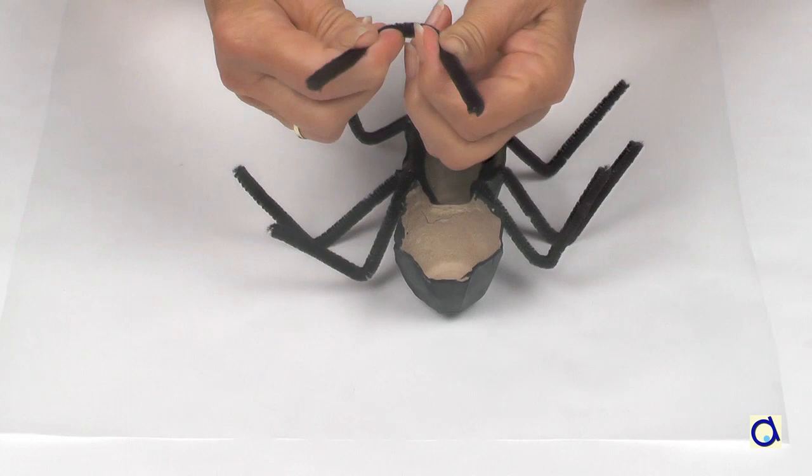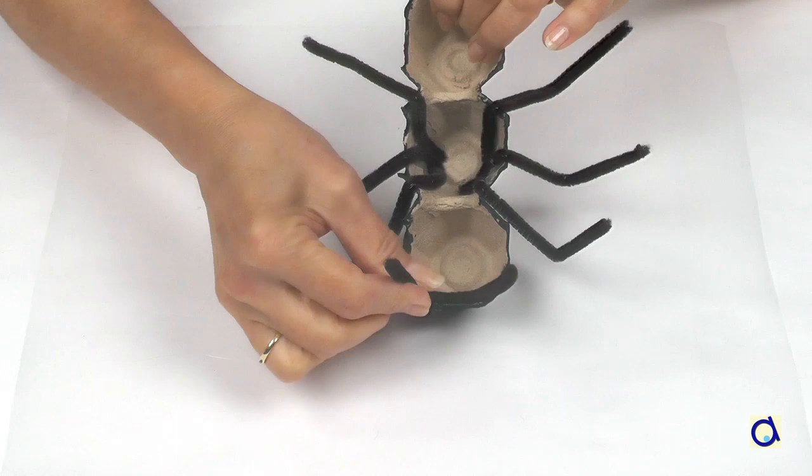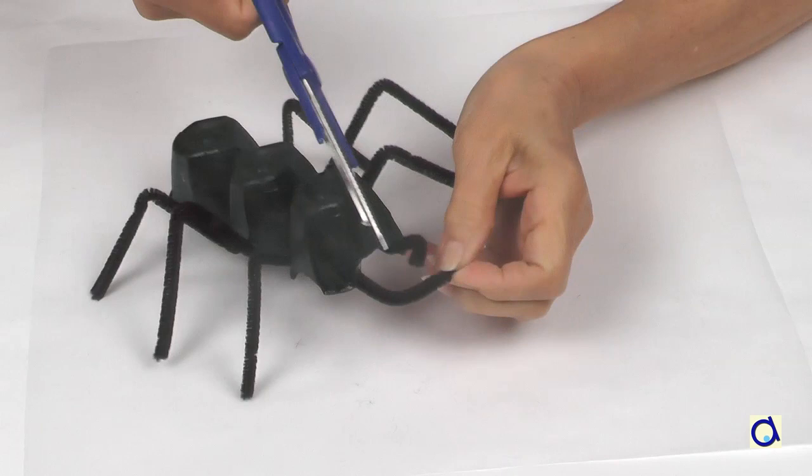Take a half pipe cleaner to represent the mandibles. The mandibles serve as teeth to the ant. Glue the half pipe cleaner to the front of the head. Cut the ends of the mandibles if they are too long.